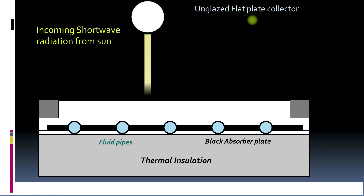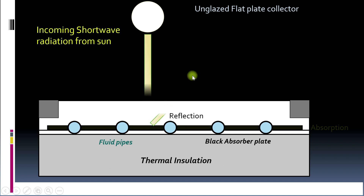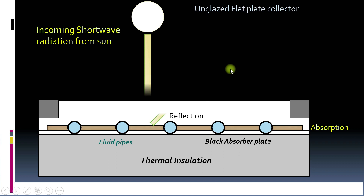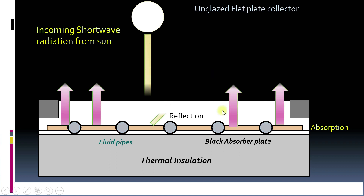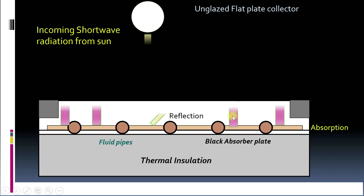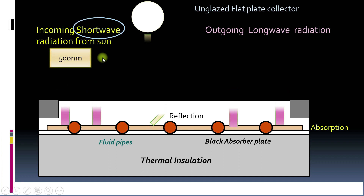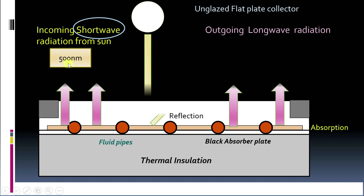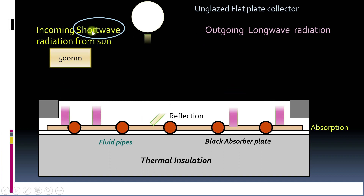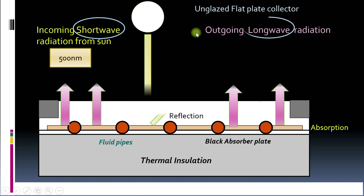When short wave solar radiation falls on the absorber plate, some of the radiation will be reflected and some will be absorbed. This raises the temperature of the fins and the pipes. As the temperature rises, the absorber plate and pipes will emit more and more long wave radiation. The maximum energy of the sun is emitted at around 500 nanometer wavelength, and this is called short wave radiation.